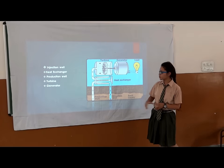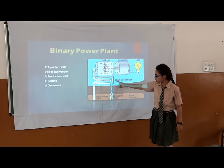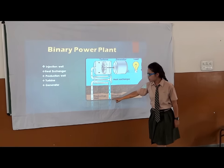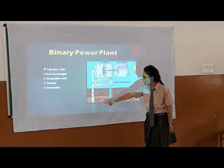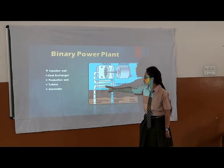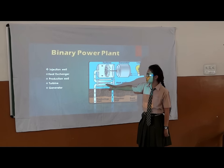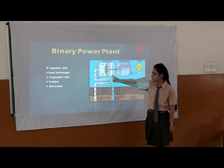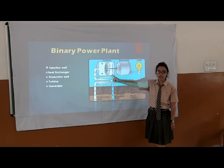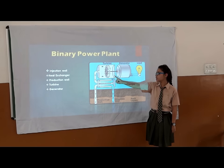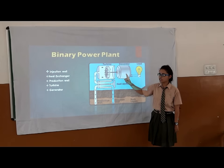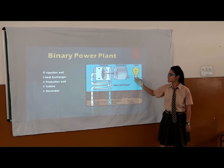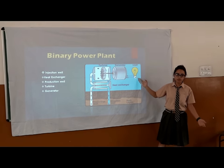First of all, it's geothermal energy. The water from the injection well goes down into the ground, and then the same form will come through the production well into the tube where the temperature will be maintained, and then it goes into the turbine where the mechanical energy gets converted into thermal energy. In the generator, the thermal energy gets converted into electricity, and thus your house will be powered.